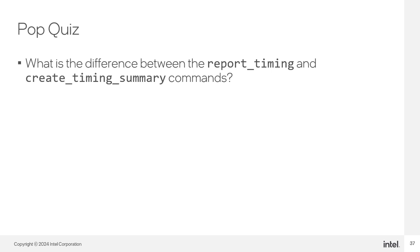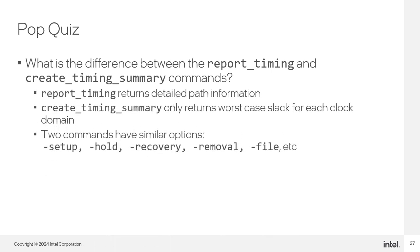For the pop quiz on timing reports: what is the difference between report_timing and create_timing_summary? Both commands return timing information and have similar options for the type of report and output location. However, report_timing returns information on worst-case paths along with associated slack and detailed delay information about the path. The create_timing_summary command generates a summary report with worst-case slack per clock domain.